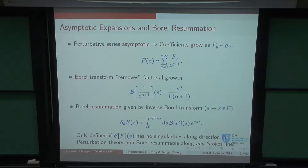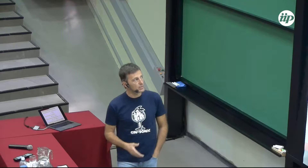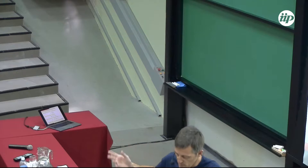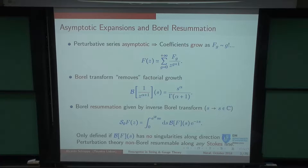Perturbation theory is great, but not that great because it's asymptotic. Let's imagine I want to compute some quantity F, which could be — if you like quantum mechanics — the ground state energy of an anharmonic oscillator, or if you like field theory, a beta function, or if you like string theory, the free energy in some coupling Z, H-bar, G-string, whatever you want. I'll take Z to be large.